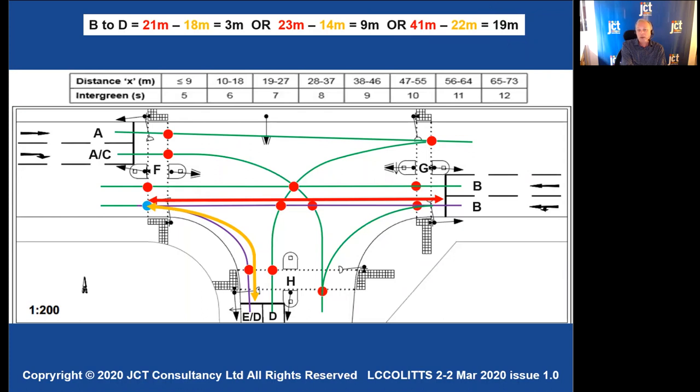Now, that gives me a whopping 19 meters path difference or X distance. So you can see if you'd have missed that one by any chance, you'd have finished up with an X distance that was too short.